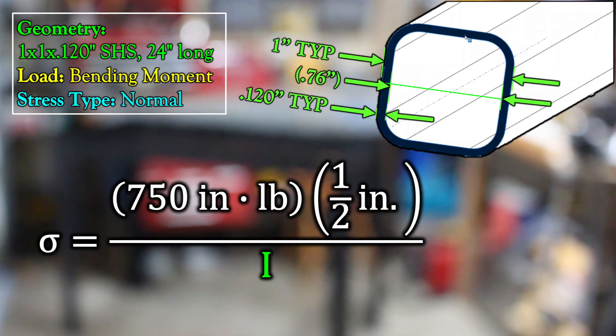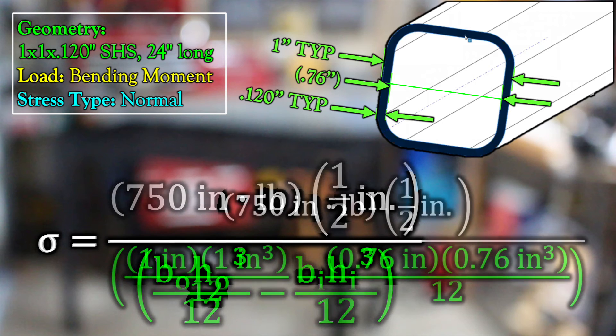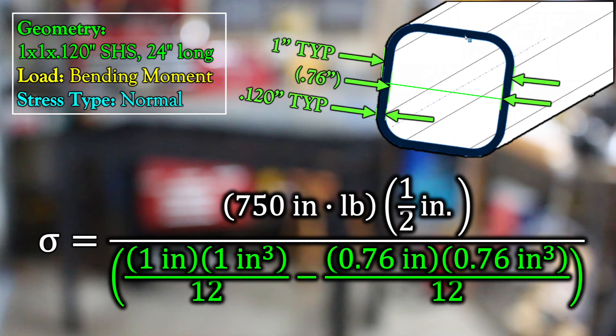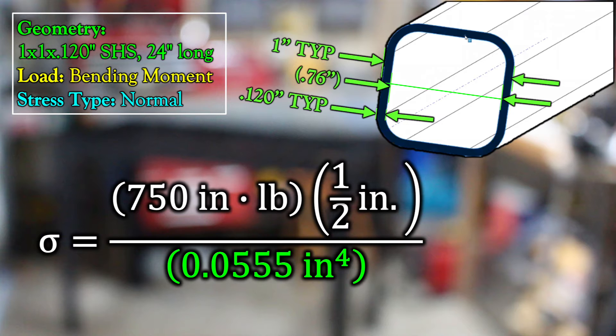I is a property that is only dependent on the geometry of your cross section. Typically, you look up an equation for I in a table that is organized by geometry type. For a simple tube like this, it's one twelfth the base times height cubed for the outer rectangle, minus one twelfth base times height cubed for the inner rectangle. For us, that ends up being 0.0555 inches to the fourth, or quartic inches.